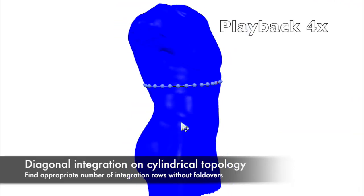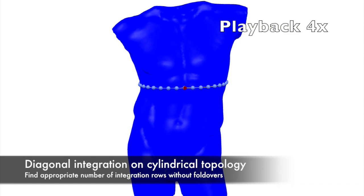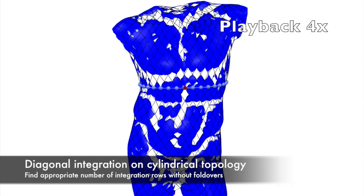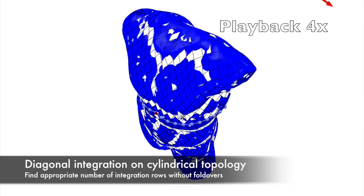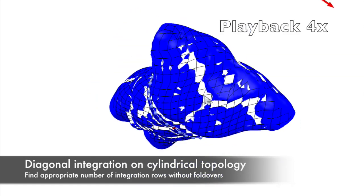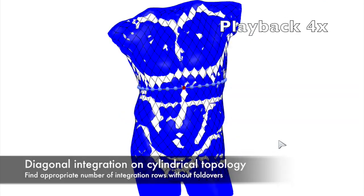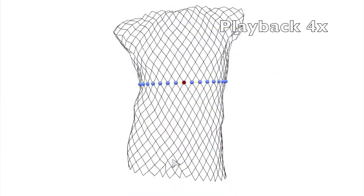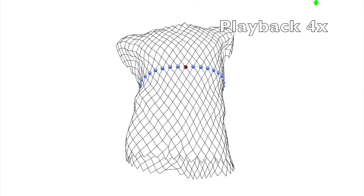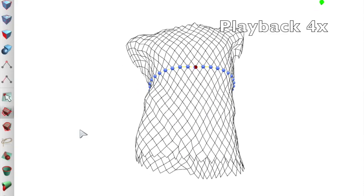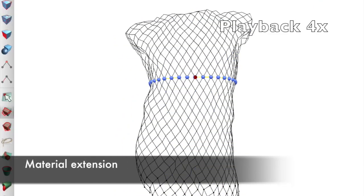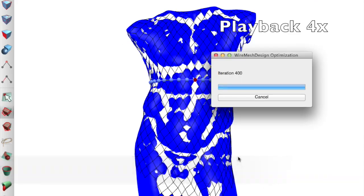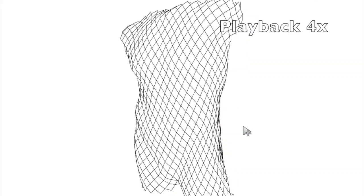Here we show the complete design process for a male torso. Our tool allows for the creation of cylindrical shapes, which are difficult to design by hand. The user first makes an initial guess and checks that there are no overlapping regions. To capture the legs, she then extends the mesh using parallel surfaces and other local editing operations.